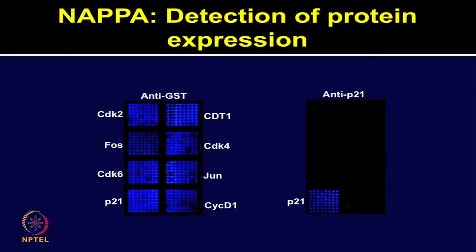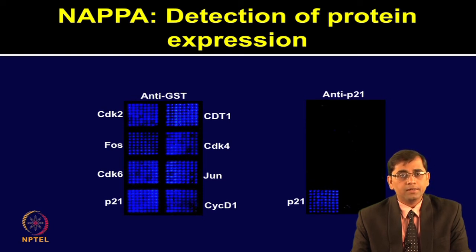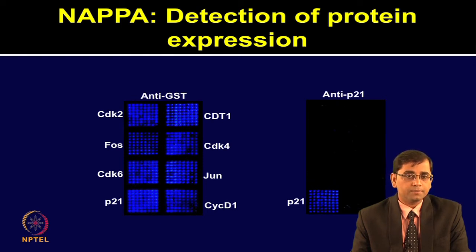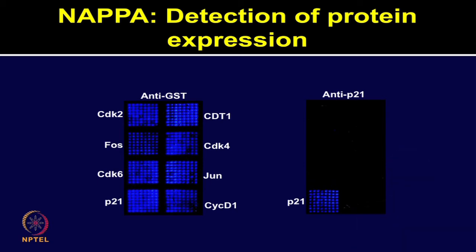Here I have shown how protein expression can be detected on NAPPA arrays. The left image shows a proof of concept study where cDNA of 8 genes are printed on the chip surface using NAPPA chemistry. Each spot is printed 64 times in an 8 by 8 block. By using anti-GST antibody, one could detect the proteins that are synthesized and expressed. It is important to ensure that protein is captured specifically using protein-specific antibodies. In this experiment, anti-P21 antibody is used to capture P21 protein, which shows signal while the rest of the 7 proteins do not show any signal, confirming specific protein expression.